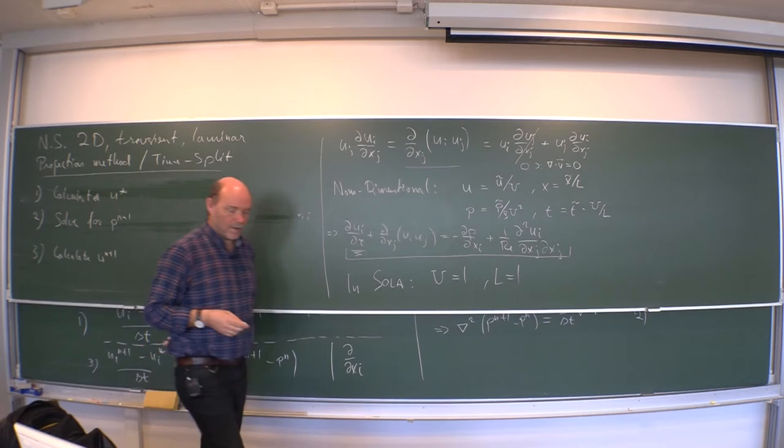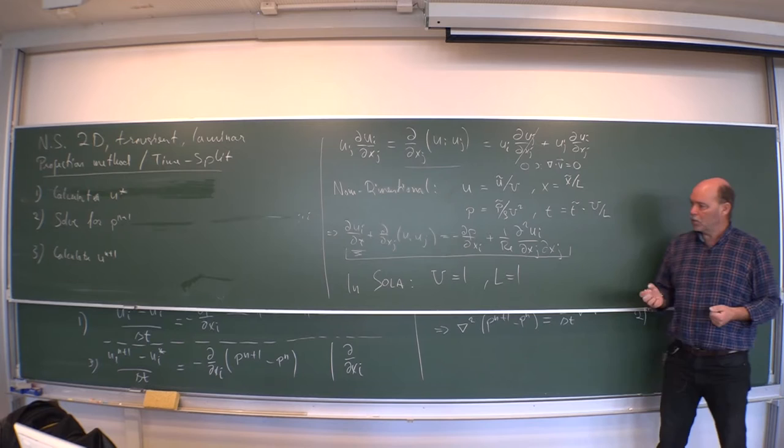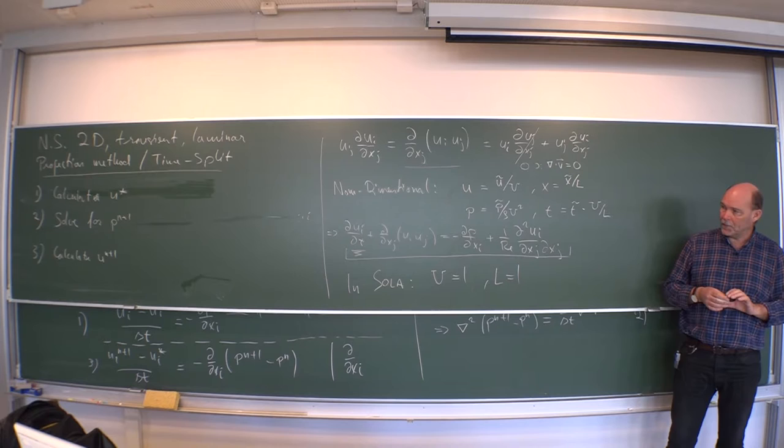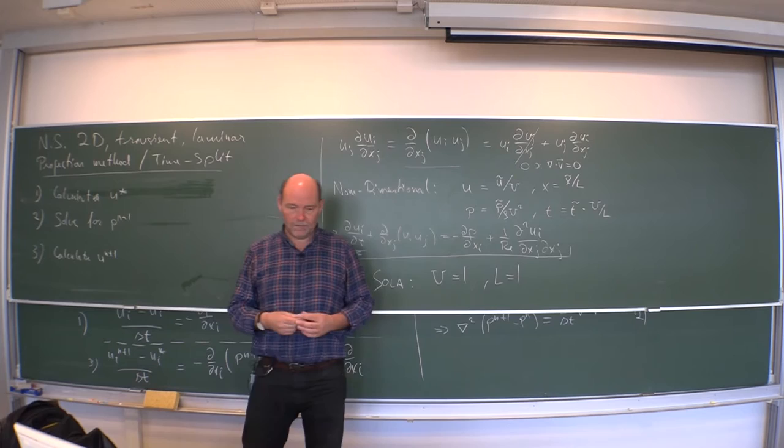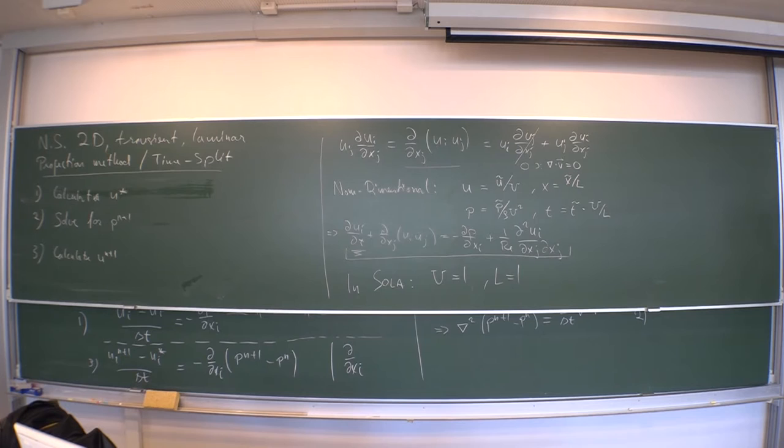You find u star. Easy, cheap. Solve a Poisson equation. That's where you have to burn all the CPU. That's the expensive part. Finding the pressure there for an elliptic equation. But then finally update the new velocity field. That doesn't cost much. So no, not a problem there. Any questions to that one? No. Let's have a look at the code then.